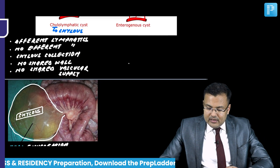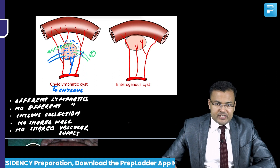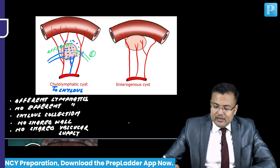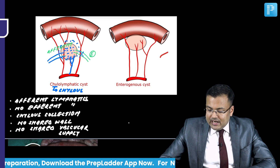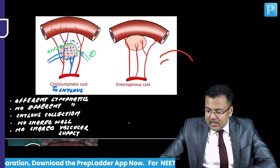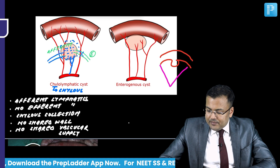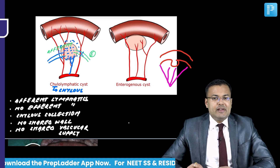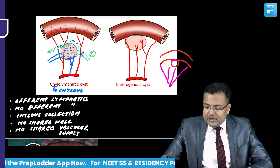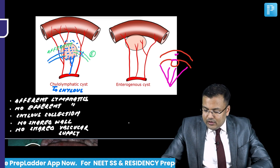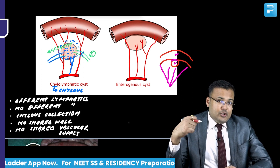Now, see the enterogenous cyst. Entero means small bowel, genesis means origin - so origin is from the small bowel. Initially these patients are having a duplication cyst or diverticula. The diverticula has a lymphovascular supply, and when the diverticula is walled off, you can see there are two completely separate lumens - this is known as duplication cyst.